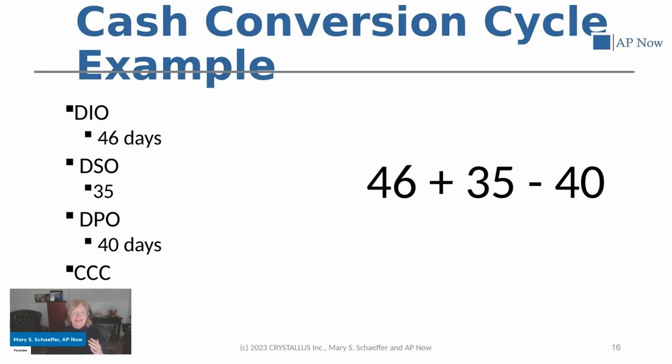Understanding these five critical financial ratios—DPO, Accounts Payable Turnover, Current Ratio, Quick Ratio, and Cash Conversion Cycle—gives you the insights needed to effectively manage accounts payable. By keeping these metrics in check, you can optimize your company's financial performance, improve liquidity, and ensure sustained growth.